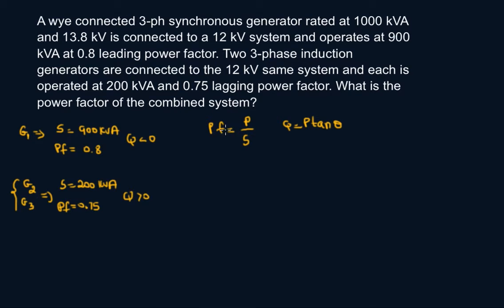In order to calculate the power factor of the combined system, this will be the total real power and the total apparent power. So Pt, the total real power of the combined system, would be the sum of the individual real powers: P1 for generator 1 plus P2 plus P3.